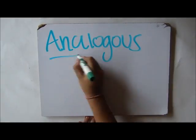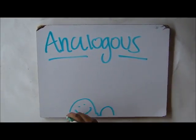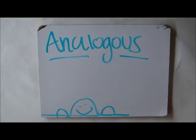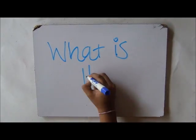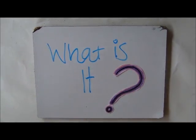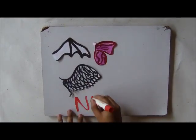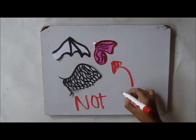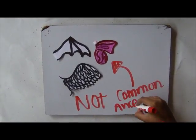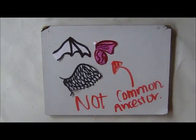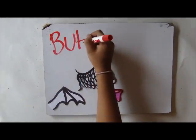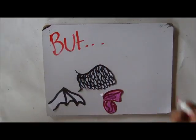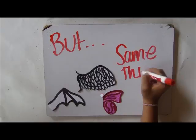Now let's talk about analogous structures, which are also a result of evolution. An analogous body structure is when a group of animals don't have a common ancestor, but they do the same thing. Like shown on the screen, all these organisms fly.